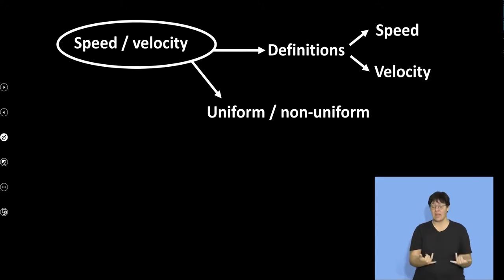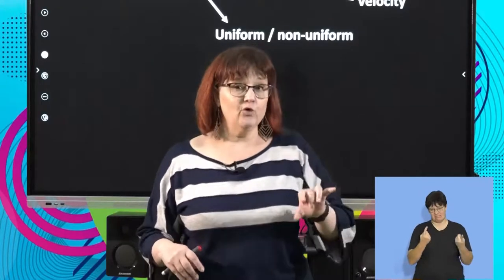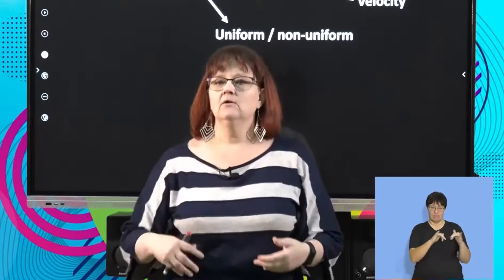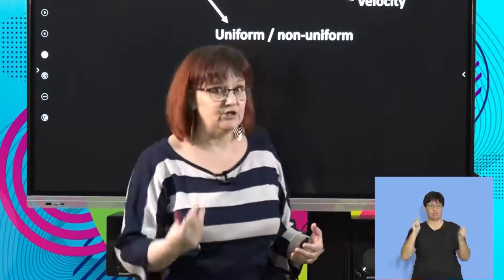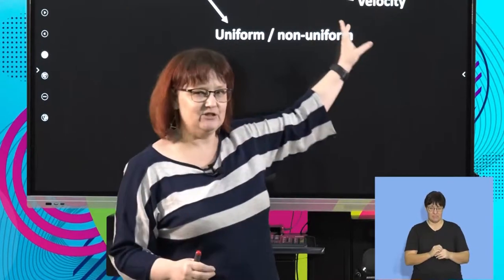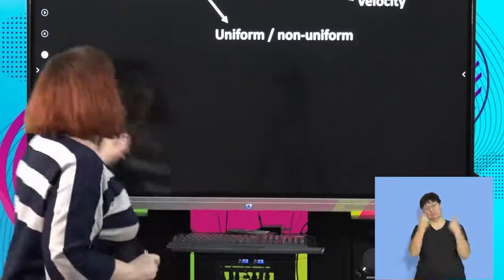Then we need to talk about what is uniform and non-uniform. This is quite important because we're going to talk about both of those. So we get uniform speed, uniform velocity, and we get non-uniform speed, non-uniform velocity. Uniform means constant. Non-uniform means not constant. So it's changing. And how velocity changes can be, it's not quite what we think. It's not just about size.